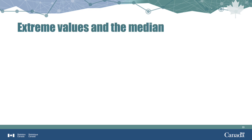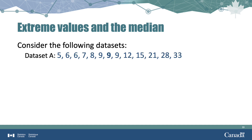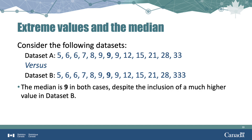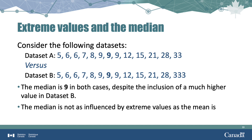A major difference between the mean and the median, besides the methods to calculate and find them, is how they are influenced by extreme values. Unlike the mean, the median is not as affected by extreme values. Consider datasets A and B, which are the same except that the largest value has been increased from 33 in A to 333 in B. Although only dataset B contains an outlier, the median is still 9 in both datasets. Even if dataset B were to contain one or two more outliers, 9 would still be the median, because it would remain as the middle value in the dataset.